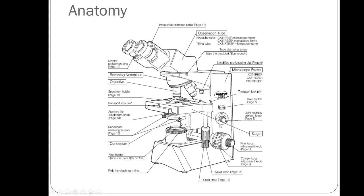The stage is where you place the slide you're examining. There's a spring contraption that locks the microscope slide in place. If you want to move the slide to center what you're looking at or examine a different area, you use the XY adjustment knobs — one moves the stage right to left and the other moves it front to back, so you can maneuver the slide however you want.